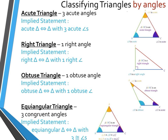We can also classify triangles by their angles. An acute triangle has three acute angles. As indicated in the picture, angle A, angle B, and angle C are all acute — all three angles are less than 90 degrees. Therefore it is an acute triangle. The implied statement: if it is an acute triangle, then the triangle has three acute angles.